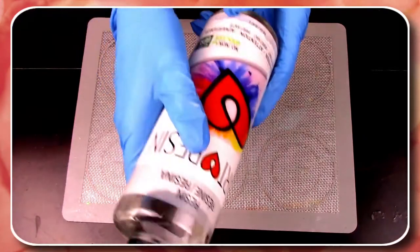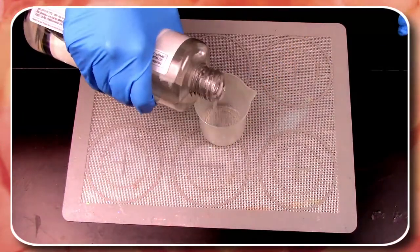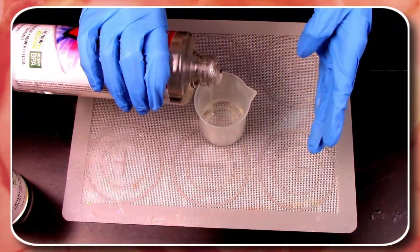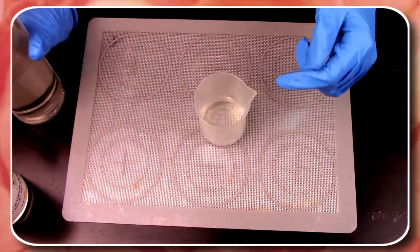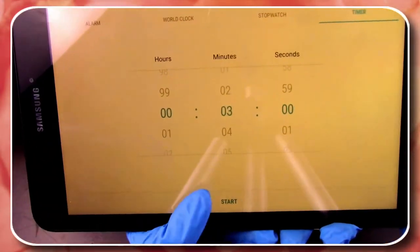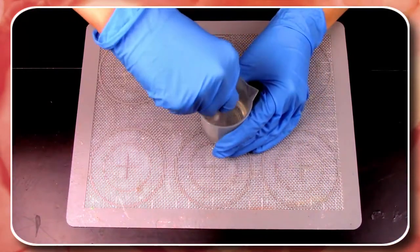Grab that resin and pour one part into your mixing container. Now get your hardener and pour an equal part into the same mixing container. Hit start on that three-minute timer and mix your mixture very slowly to avoid any excess bubbles.